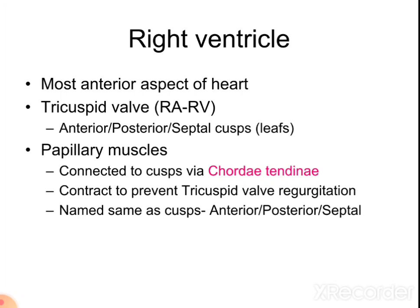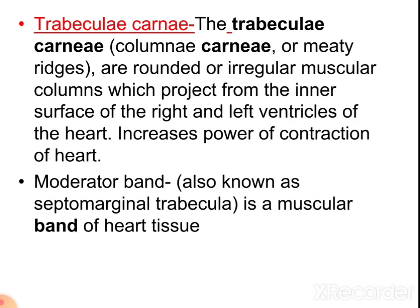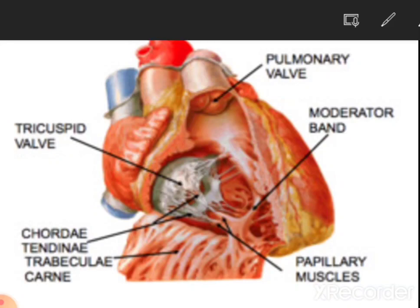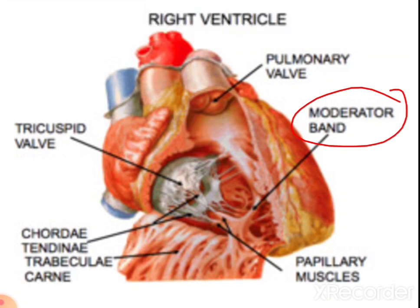In the right ventricle the tricuspid valve has three cusps: anterior, posterior, and septal. Papillary muscles are connected to chordae tendineae, which contract to prevent tricuspid valve regurgitation. The muscular projections known as trabeculae carneae are rounded or irregular muscular columns projecting from the inner surface of the ventricles, increasing the power of contraction. The moderator band, also known as the septomarginal trabecula, is a muscular band of heart tissue in the right ventricle that contains the right bundle branch.